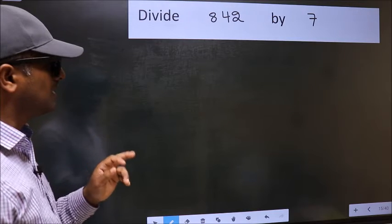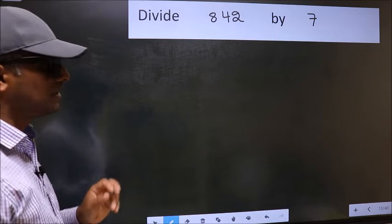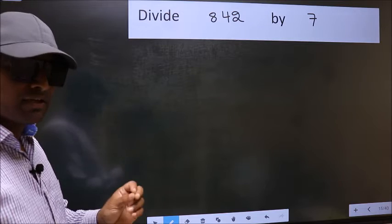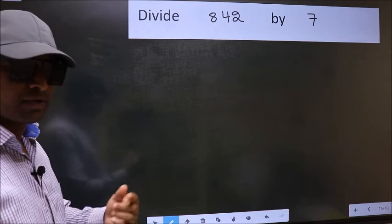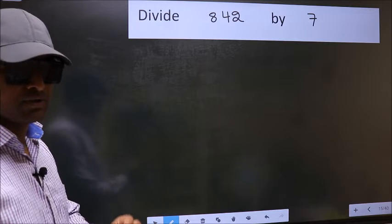Divide 842 by 7. While doing this division, many do this mistake. What is the mistake that they do? I will let you know.